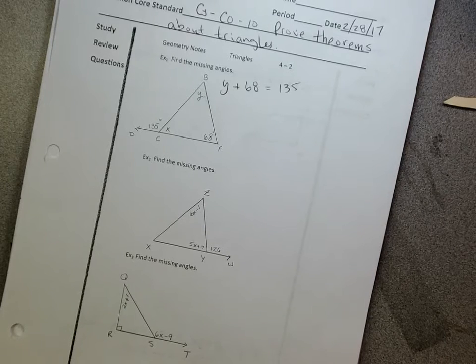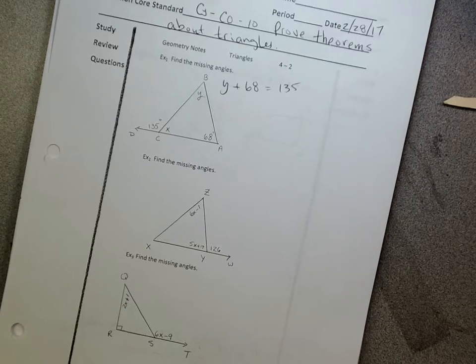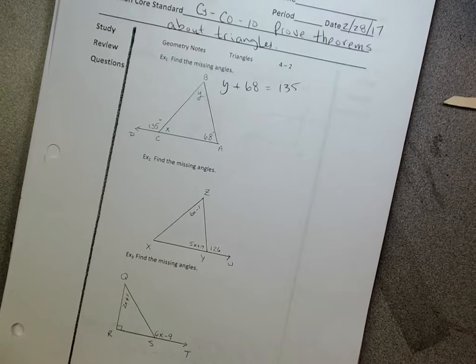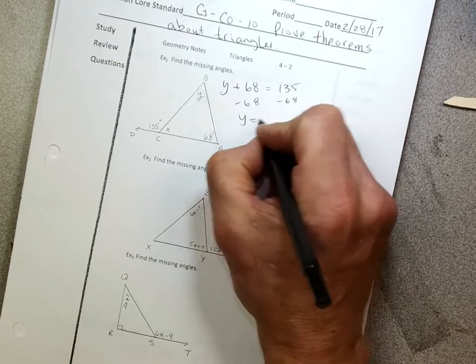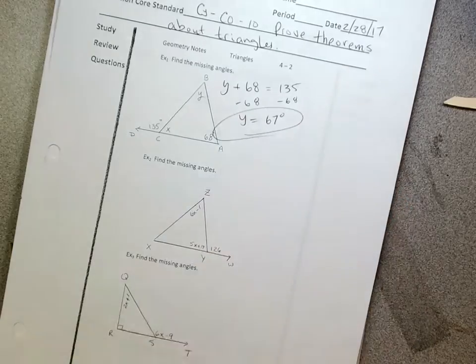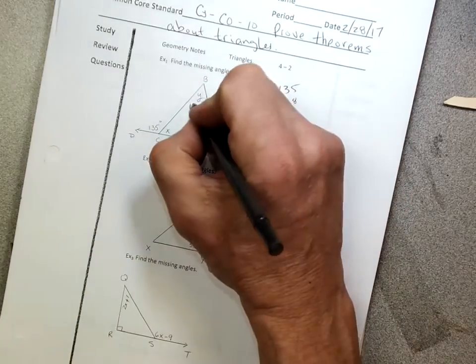So I'm going to go ahead, minus 68, minus 68. Okay, Katie's way ahead of me, I like that. So y equals 67 degrees, okay? So if this is 67 degrees, then there's two ways to get x.